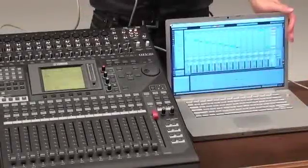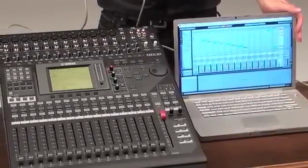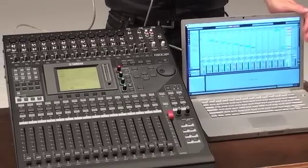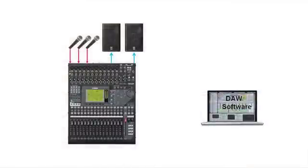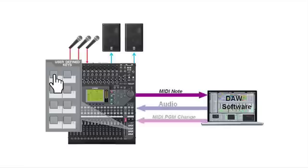With this system, sound effects prepared on your DAW will be played through the Yamaha O1V96i by following these simple steps. Press a user-defined key to send the assigned MIDI note. Once your DAW receives the signal, the corresponding audio and MIDI program change will be sent back to your O1V96i console to recall the scene.